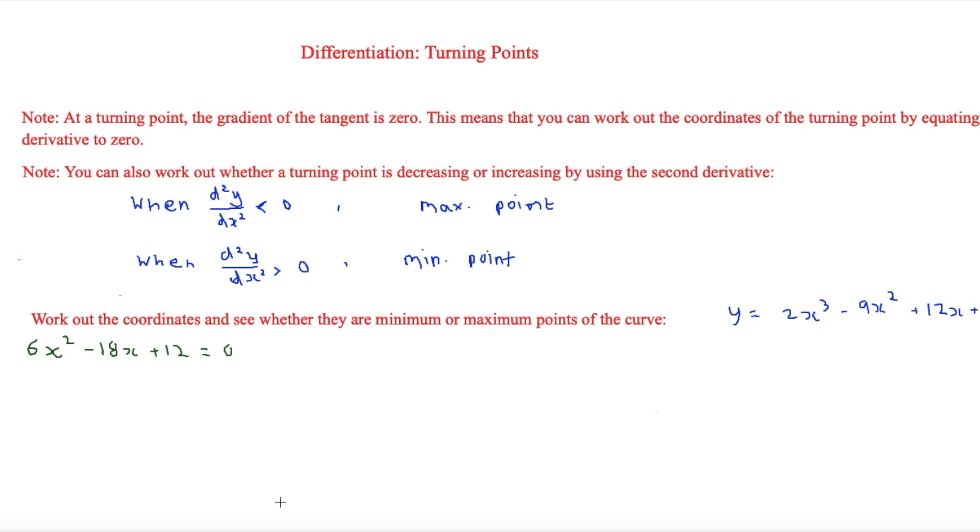Now therefore what we can do is we can simply work out what x is in this. This is a quadratic equation and it will be easier just to divide everything by 2. So 3x² - 9x + 6 = 0.